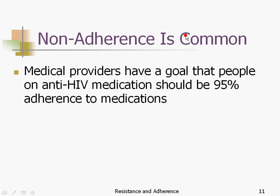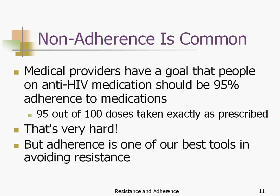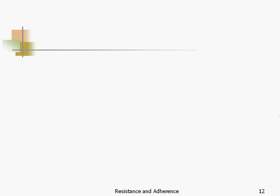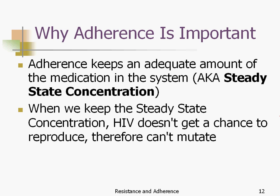Non-adherence is really common. The goal of adherence is that you take 95% of your pills exactly on time, exactly the way they're prescribed — 95 out of 100 doses. That's very difficult, a really tall order. But adherence is one of our best tools for avoiding resistance. Adherence keeps a steady level of medication in the system, called the steady state concentration. When we maintain the steady state concentration, HIV doesn't get a chance to reproduce and therefore can't mutate. If it never gets a chance to make new baby HIV, it never has mutations and doesn't get a chance to become resistant.